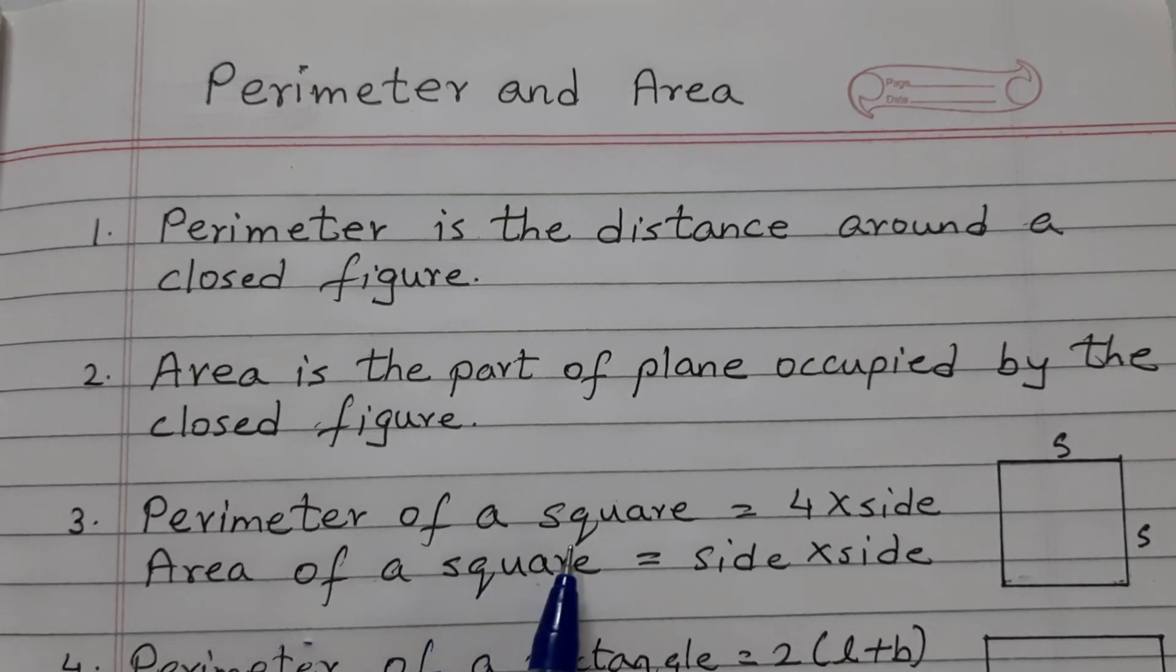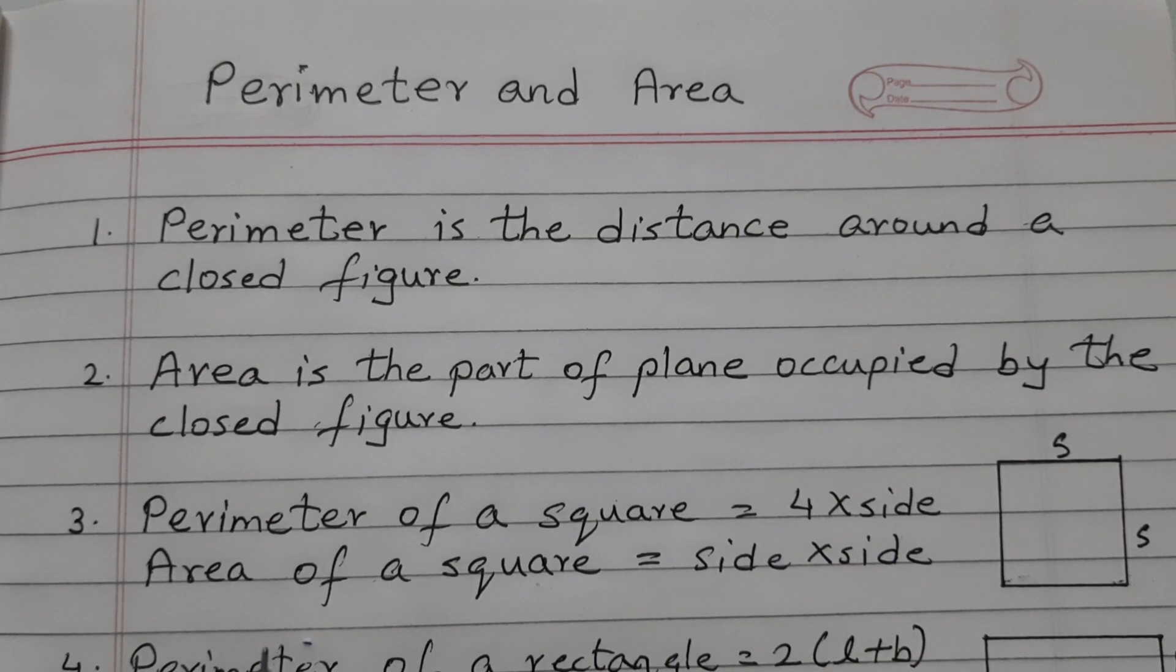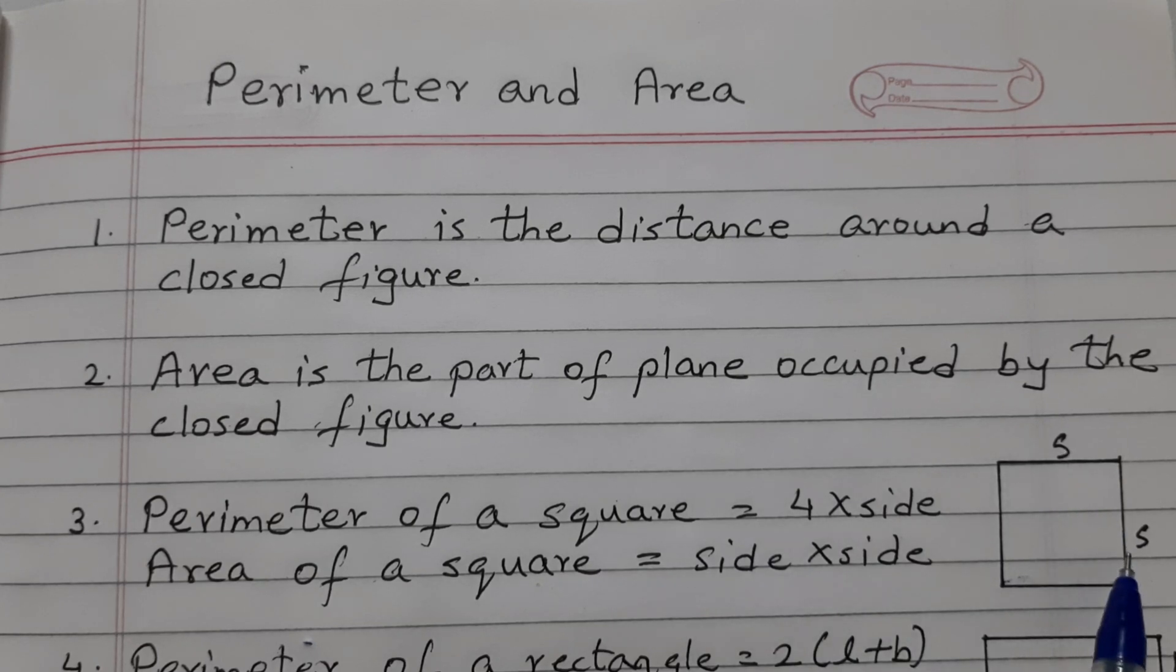Perimeter of a square is equal to 4 into side. S represents side, so 4 into side. Area of a square is equal to side into side.